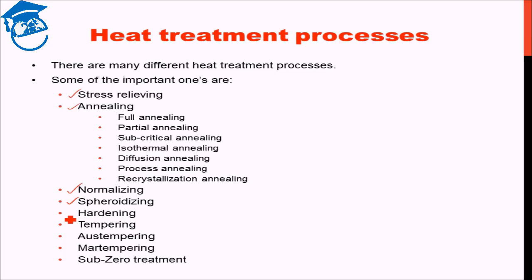Then we have hardening. Hardening is basically converting the sample into martensitic form — we take the material to a high temperature in the austenitic range and then cool it very rapidly so that we get martensite.